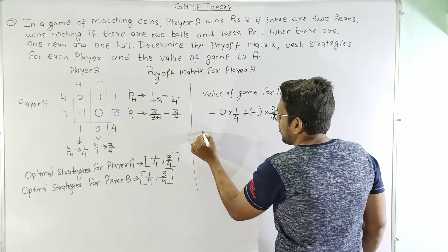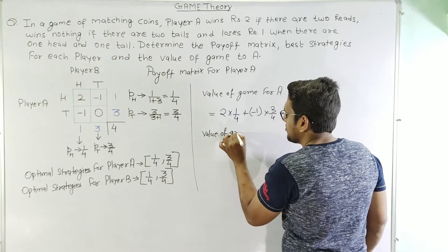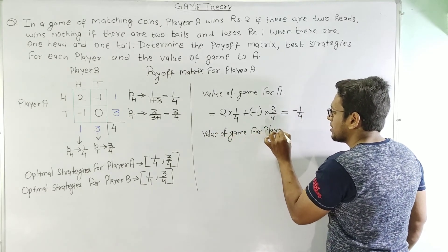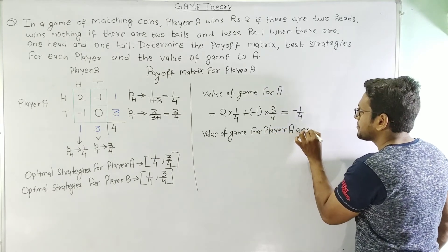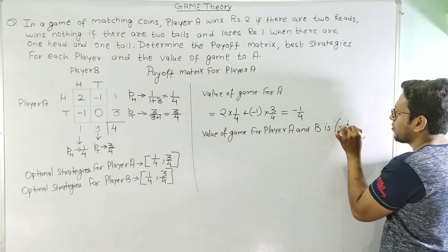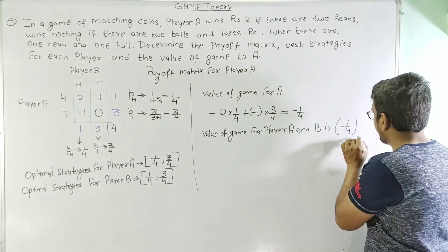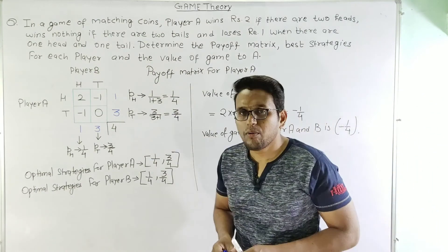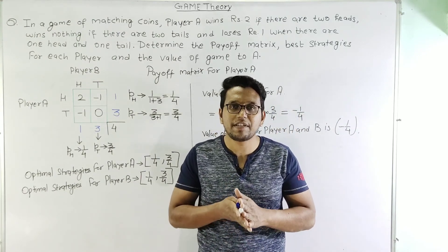The value of game for both player A and player B is -1/4. I hope this is clear to you. If you like the lecture please share it. Have a nice day. Thank you.